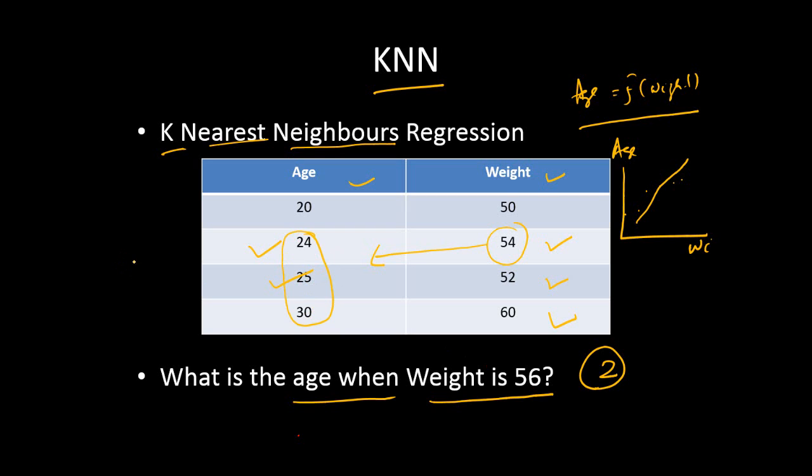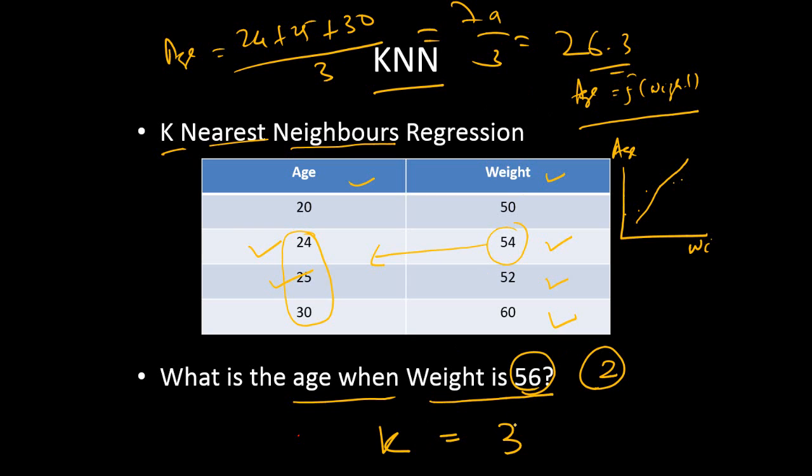The age is now 24 plus 25 plus 30 divided by 3, which is 79 by 3, which is nothing but 26.3. The age of the individual with weight 56 is nothing but 26.3 from the KNN regression. K in this case is 3. First we tried 1, now it is 3. Now the question is: what is the optimal number of K, or optimal number of nearest neighbors, nearest observation that one should consider?